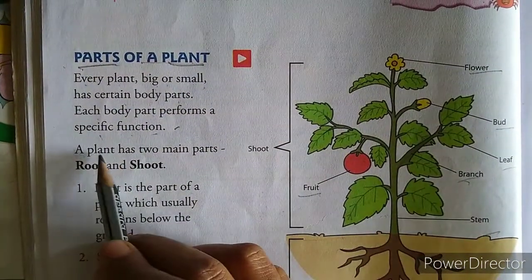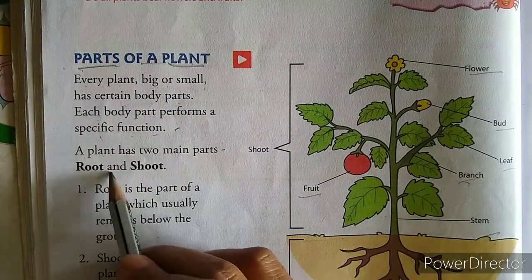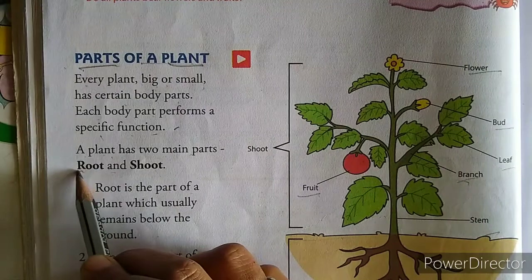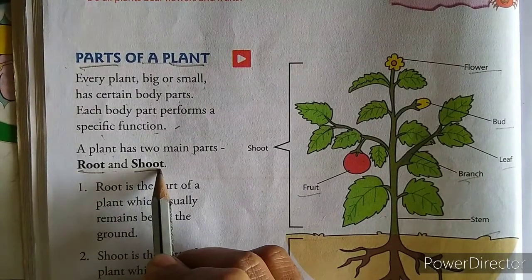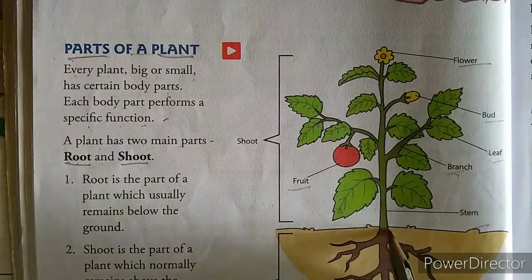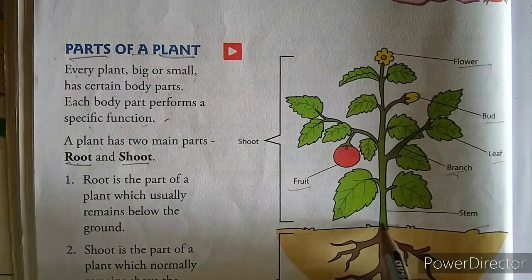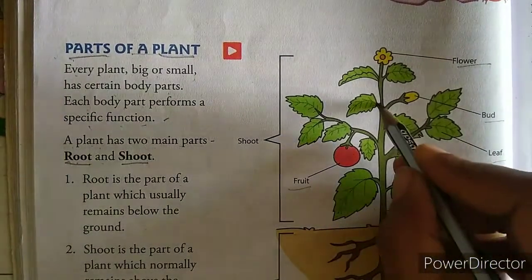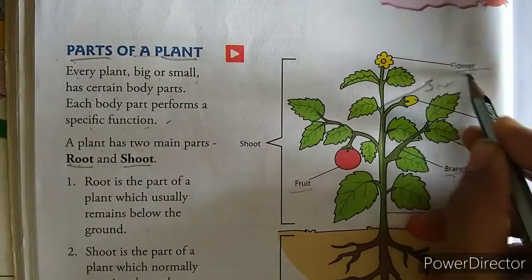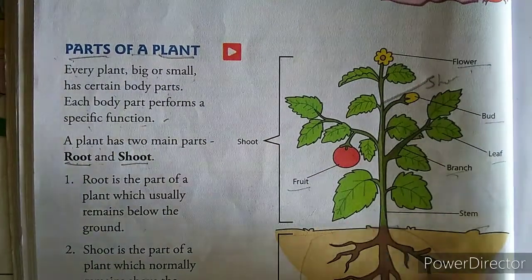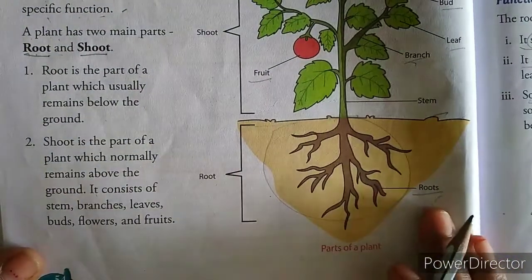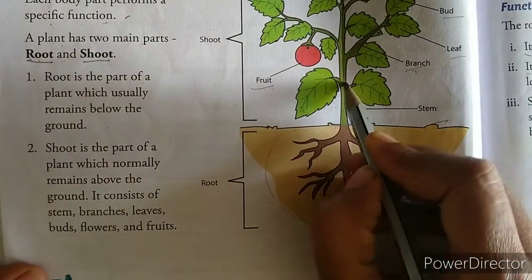A plant has two main parts: root and shoot. Plants ke do main parts hote hain — ek hota hai root aur doosra hai shoot. Root joh ground mein neeche ki taraf grow karta hai, aur shoot joh upar ki taraf grow karta hai. This part is called shoot and this part is called root.